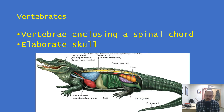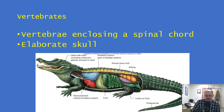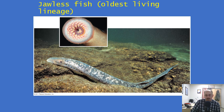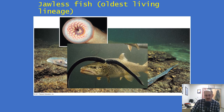Then we have the evolution of the vertebrates — we actually have vertebrae encasing that spinal cord, and a skull develops. Now we have skulls and spinal cords in all the rest of the groups. The first group of true vertebrates are the jawless fish, like the lamprey. They still don't have jaws, but they do have a skull, a cartilaginous skeleton, and vertebrae. They have a mouth that's like a suction cup with teeth on it. The jawless fish are the oldest living lineage of vertebrates. These often act as parasites in lakes, attaching to fish and drinking their body fluids.